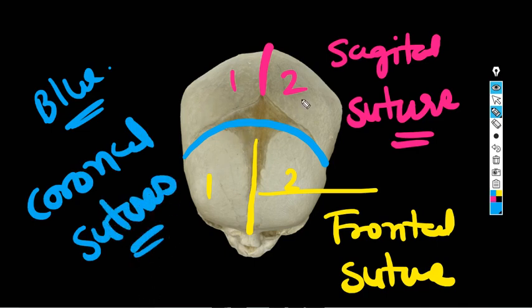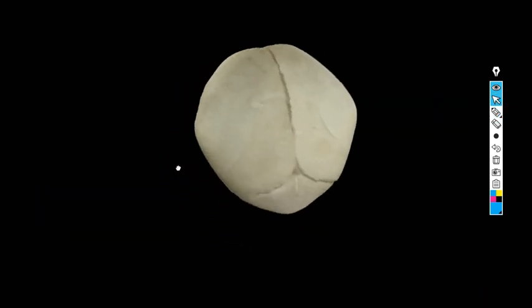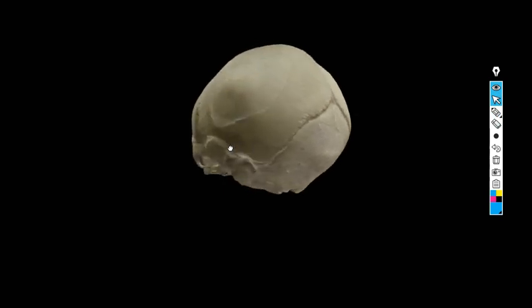So coronal sutures are two, one and two. Sagittal suture is one, frontal suture is one. Now if we go posteriorly, we see two more sutures here.